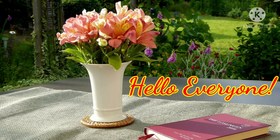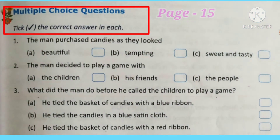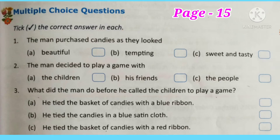First we will do back exercises of this chapter. The first exercise is multiple choice questions on page number 15 — three options are given for each question and you have to pick the correct answer. Question number one: the man purchased candies as they looked — the options are beautiful, tempting, or sweet and tasty. The correct answer is tempting. Tempting means something attractive that makes people want to have or eat it.